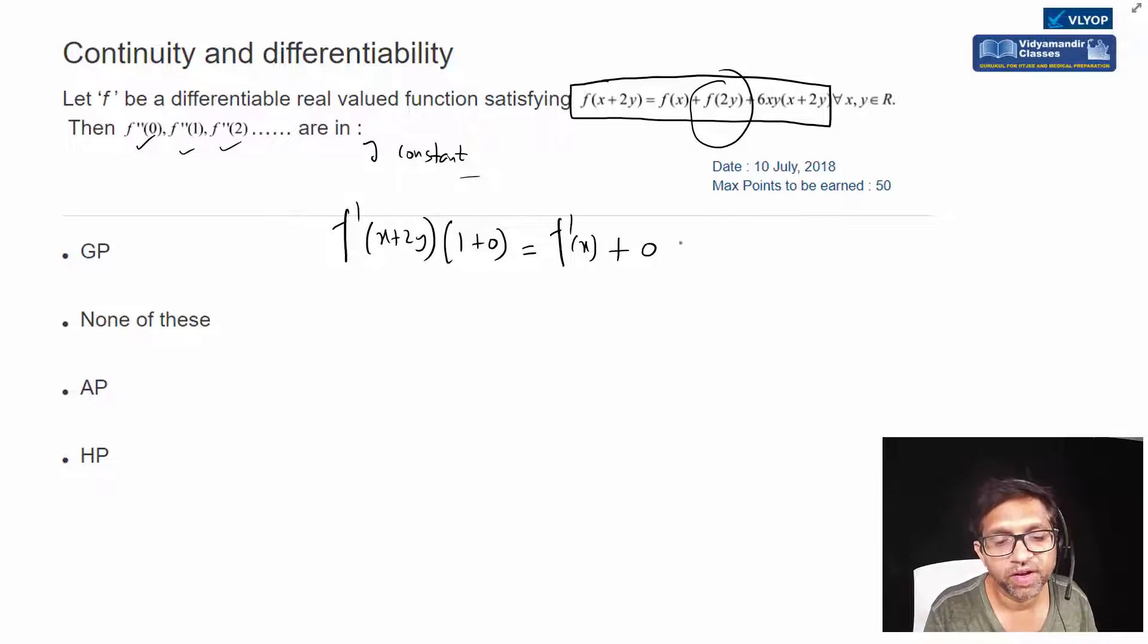Again same here, I apply product rule - 6y is constant, I keep it like this, derivative of x is 1. Then I take x+2y constant, and then I take 6xy constant, differentiate x+2y - x derivative is 1, y derivative is 0, 2y is 0.